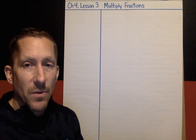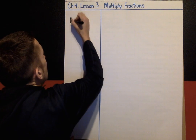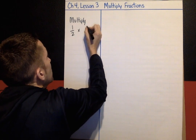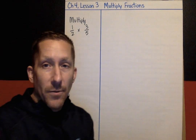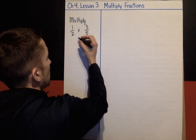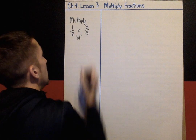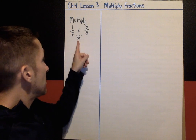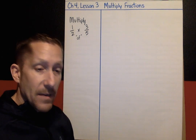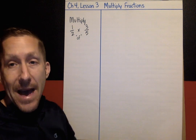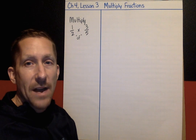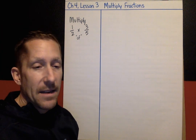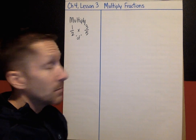The first example we're going to do is: how would you multiply one-half times three-fifths? I also want to remind you that the word 'of' also means multiplying in math. So if you were asked to figure out what is half of three-fifths, that is the same thing. Also, the order of multiplying doesn't matter — that's the commutative property. Subtraction and division, order does matter.